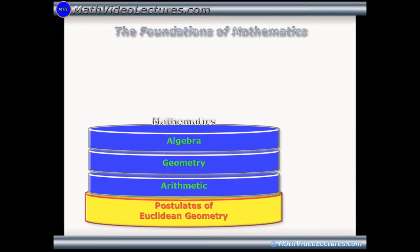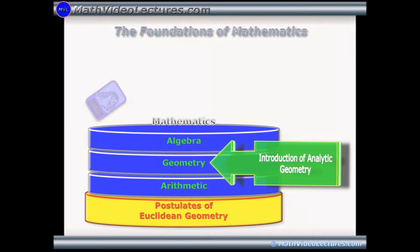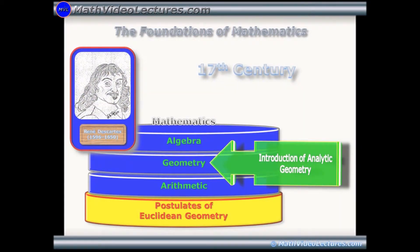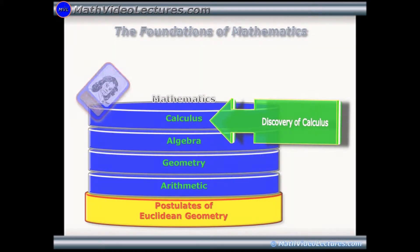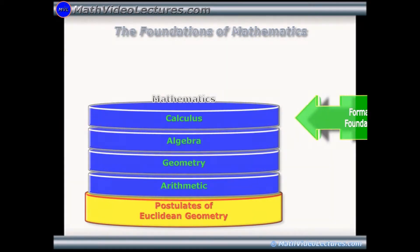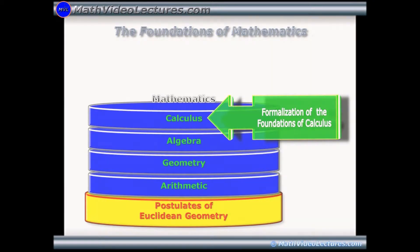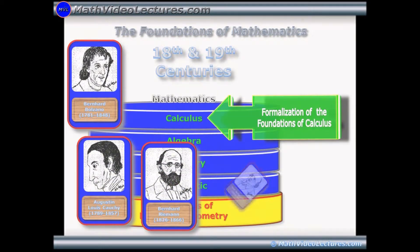Among the most important of these discoveries, we can mention the introduction of analytic geometry by René Descartes in the 17th century, the discovery of calculus by Isaac Newton and Gottfried Leibniz, also in the 17th century, and advances in the formalization of the fundamental concepts of calculus during the 18th and 19th centuries by Bernhard Boltzano, Augustin Louis-Cauchy, Bernhard Riemann, and Karl Weierstrass.